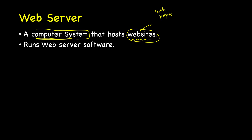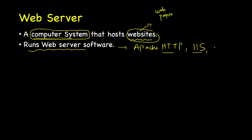So what is the difference between a normal computer system and a web server? The difference is that a web server is a computer system running a web server software, for example Apache HTTP web server, which is the most popular one today. Then we have Microsoft IIS and some others.